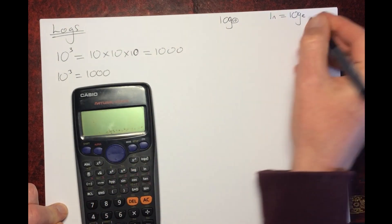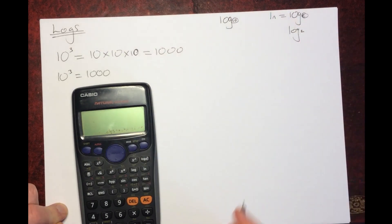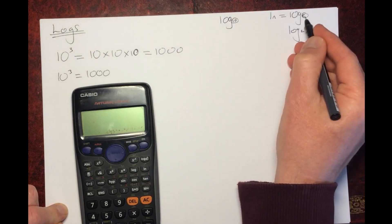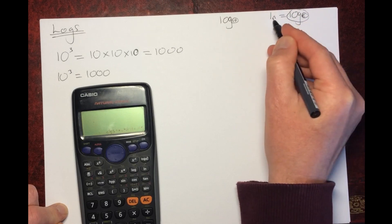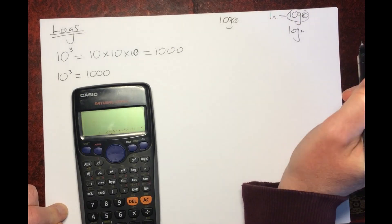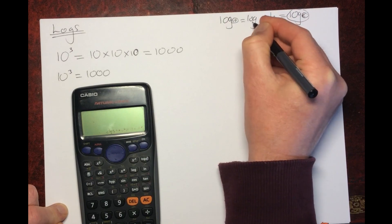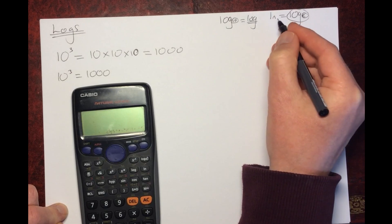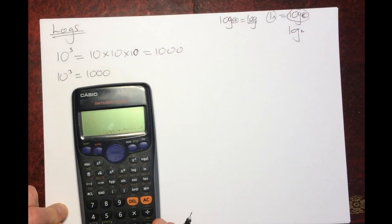This is what we call the base. You can have log to the base of any number — base 2, 3, 4, 5 — but the usual ones we use are log to the base 10 and log to the base e. Log to the base e we write as ln, or natural log. Log to the base 10 we just write as log. So if you see log, assume base 10; if you see ln, that's log to the base e.